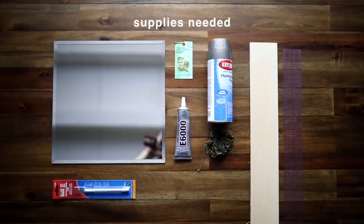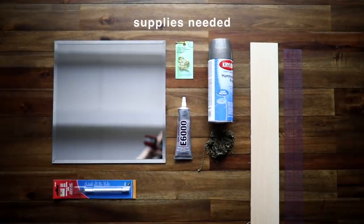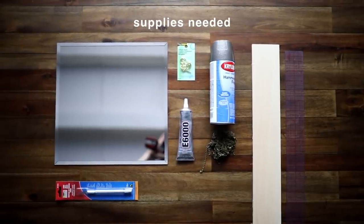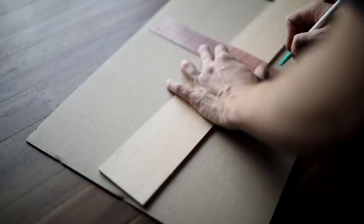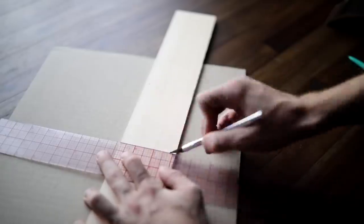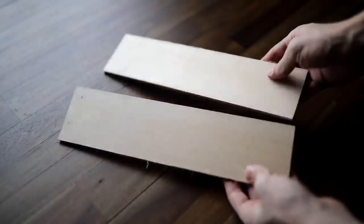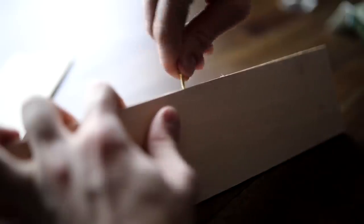For the hanging mirror DIY you need a square mirror, some E6000, an exacto knife, chain, spray paint, a piece of wood, ruler, and screw hooks. Start by taking a small piece of wood and cutting it down to 12 inches in width.